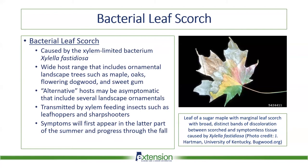Now I'll move on to the last bacterial disease: bacterial leaf scorch. Dr. Connors has seen this disease become more common in recent years, likely due to the warmer winter temperatures of the last couple years. It's caused by a xylem-limited bacterium called Xylella fastidiosa, which does not survive outside of host tissue and is very difficult to grow in laboratory conditions. It has a wide host range that includes ornamental landscape trees such as maple, oaks, flowering dogwood, and sweet gum — all common shade trees in Alabama. One issue is that several alternative hosts in the landscape may be asymptomatic or show very little discernible symptoms, serving as a reservoir for this pathogen.